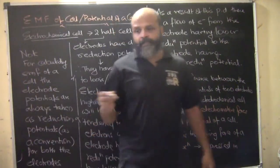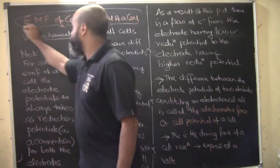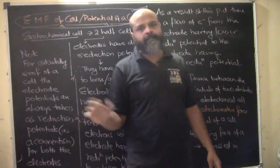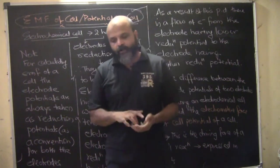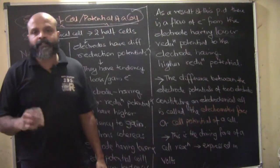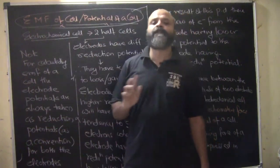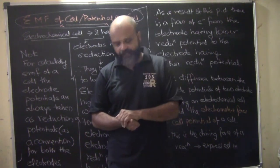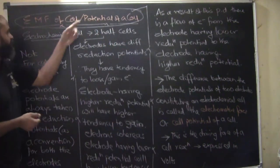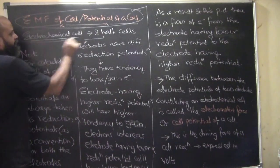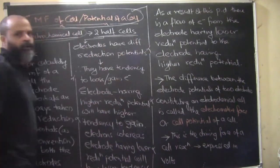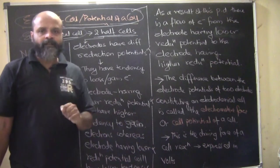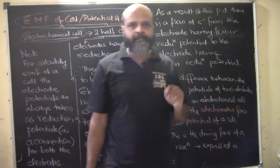What is the EMF of a cell or potential of a cell? Electricity — whether in a circuit, electrolyte, or electrochemical cell — will flow only due to a potential difference. So if electricity is flowing in an electrochemical cell, there has to be an EMF generated, which is basically the potential difference. An electrochemical cell consists of two half cells: in one, oxidation takes place, and in the other, reduction takes place.